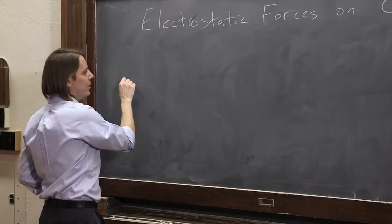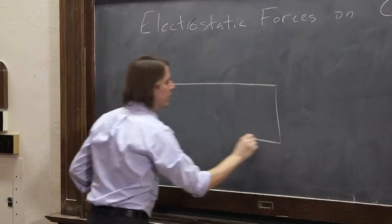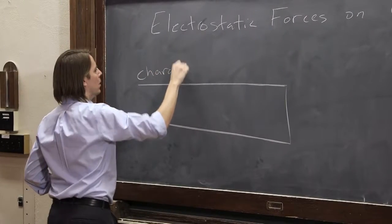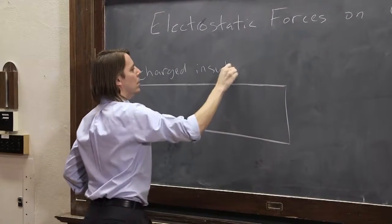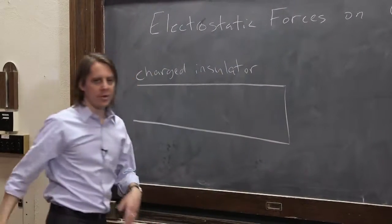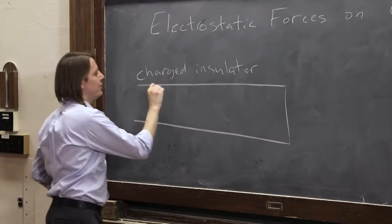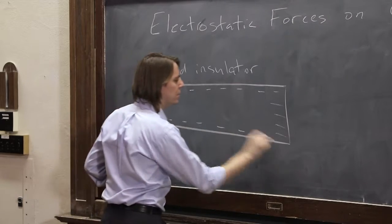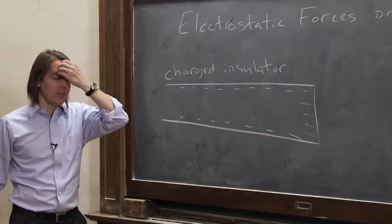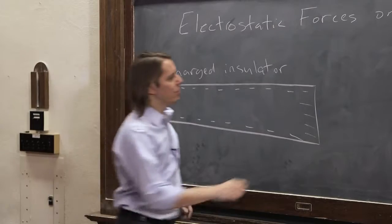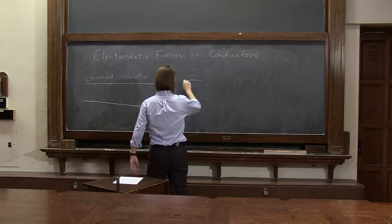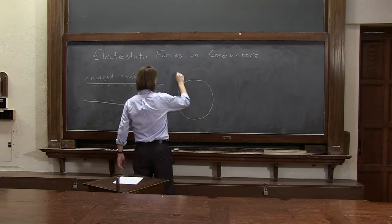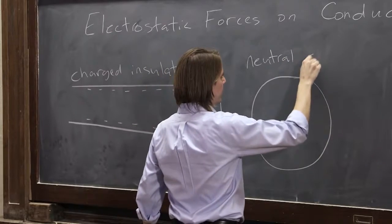We'll start with the Teflon rod that we know and love. This is a charged insulator — it's really just here to give us some charge. So if we rub the Teflon rod with our cat fur, then we'll have a nice negatively charged surface. And then nearby, we'll put a big sphere of neutral conductor.